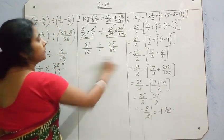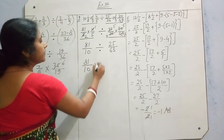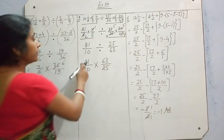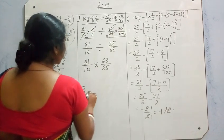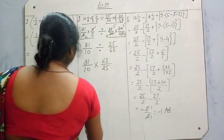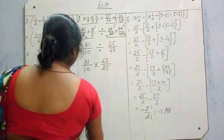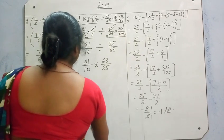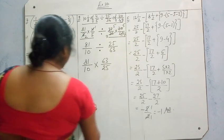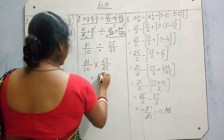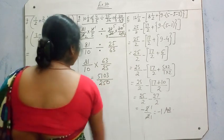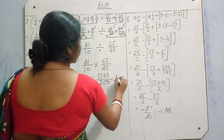Now we solve the division: change to multiplication with the reciprocal of 25/63. We cannot cancel any numbers, so we multiply directly: 63 into 81 gives 5103 over 240. You can change this to a mixed fraction yourself — write this answer down.